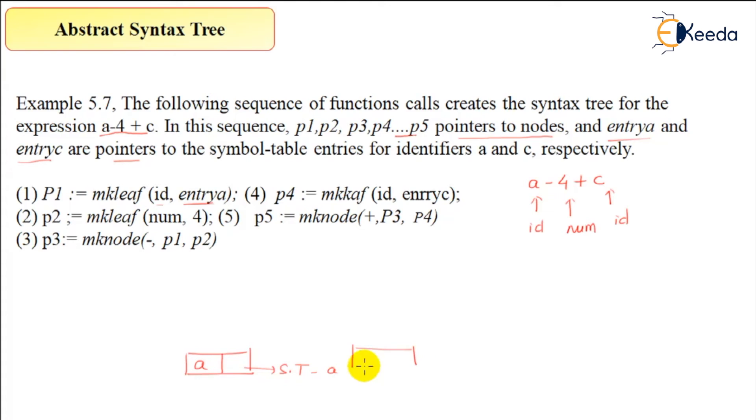P3 is a node with minus operator. This is a node with minus operator, and this one is called p1 and this one is called p2. This node has pointers toward p1 and p2, so this will be pointing here and this node will be pointing here.